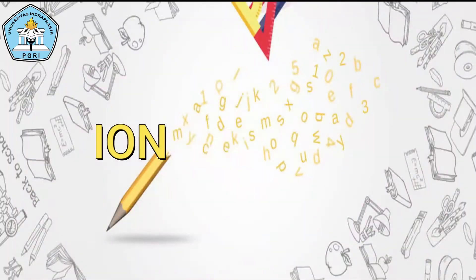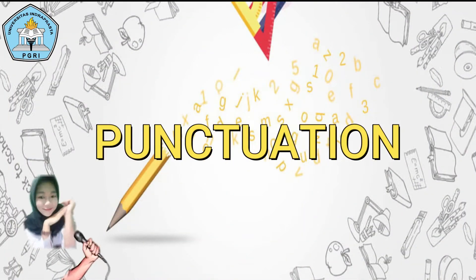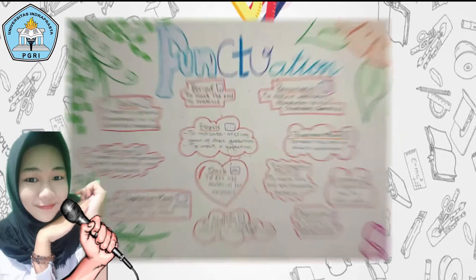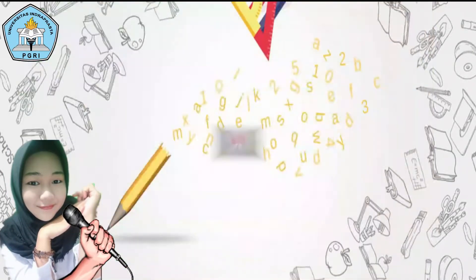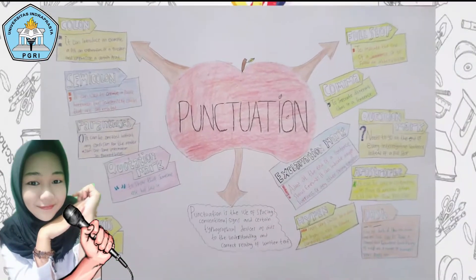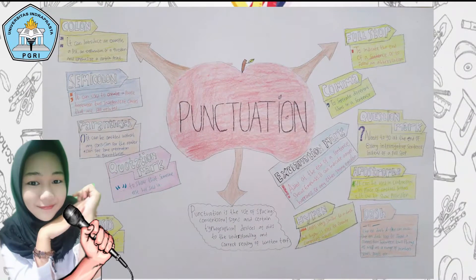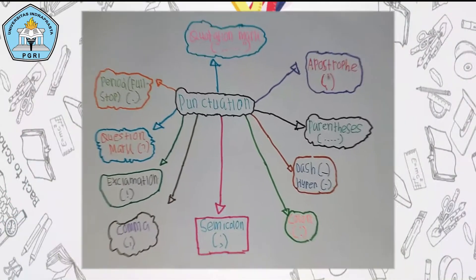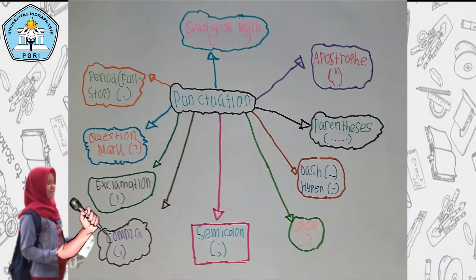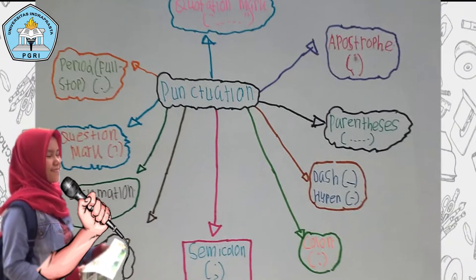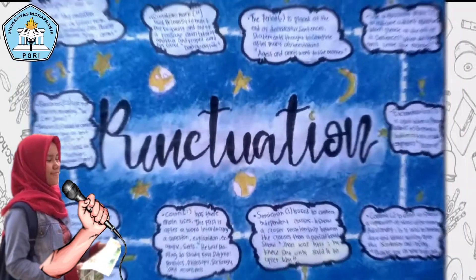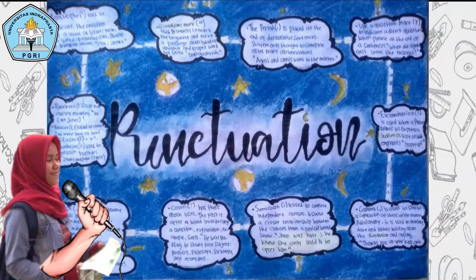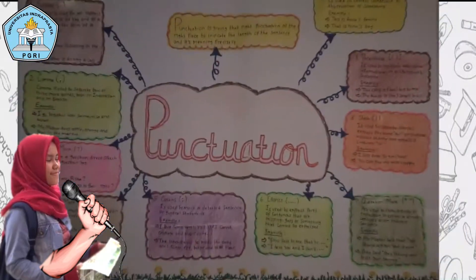Punctuation is the system of signs or symbols given to a reader to show how a sentence is constructed and how it should be read. Example of punctuation mark: number one, period — ends a sentence. Example: 'Jan and Jack went to the market.'